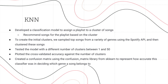For KNN, we developed a classification model to assign a playlist to a cluster of songs, and then recommend songs for the playlist based on the cluster. To create the initial clusters, we sampled top songs from a variety of genres using the Spotify API and then clustered those songs. We tested the model with a different number of clusters between 1 and 50, and then plotted the cross-validation accuracy against the number of clusters. We also created confusion matrices, which are how we visualize performance of the methods.